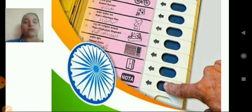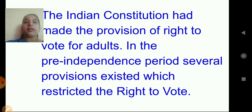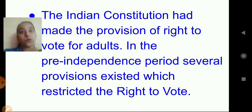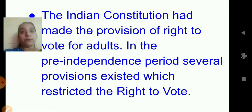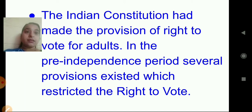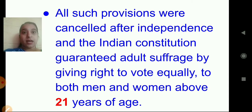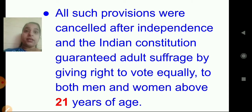This is a voting machine — we vote for the particular candidate whom we wish to elect. The Indian constitution made the provision of right to vote for adults. In the pre-independence period, several provisions existed which restricted the right to vote; for example, women were deprived of the right to vote. All such provisions were cancelled after independence, and the Indian constitution guaranteed adult suffrage by giving the right to vote equally to both men and women.